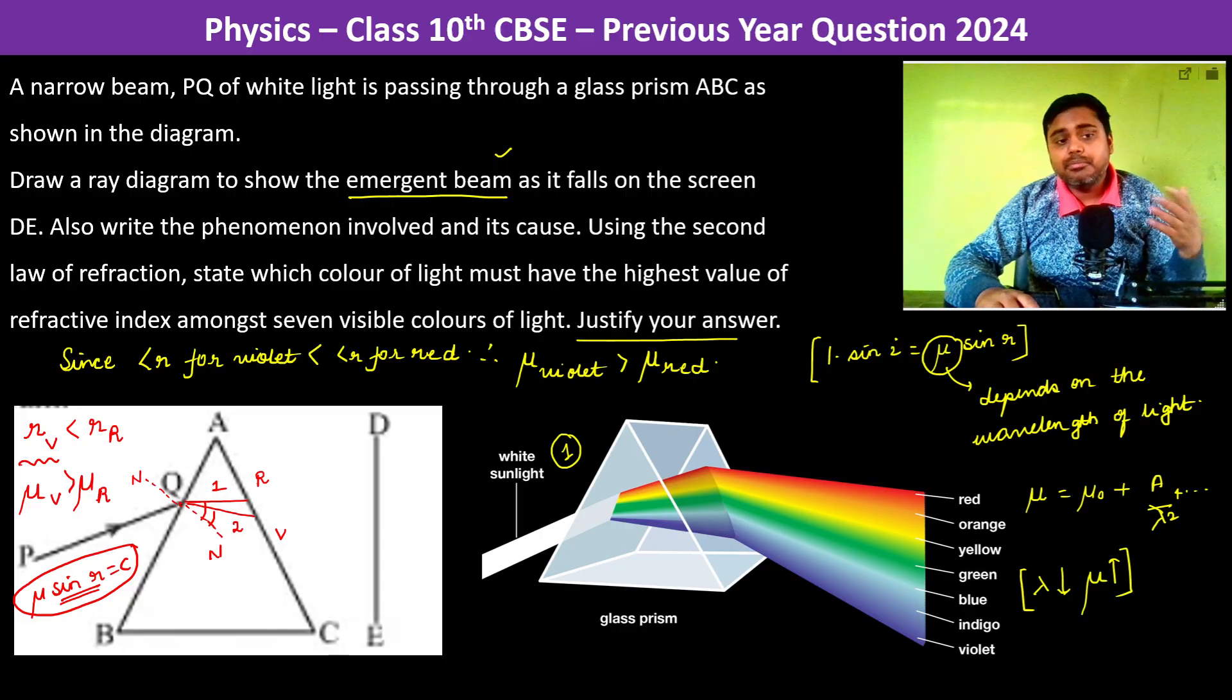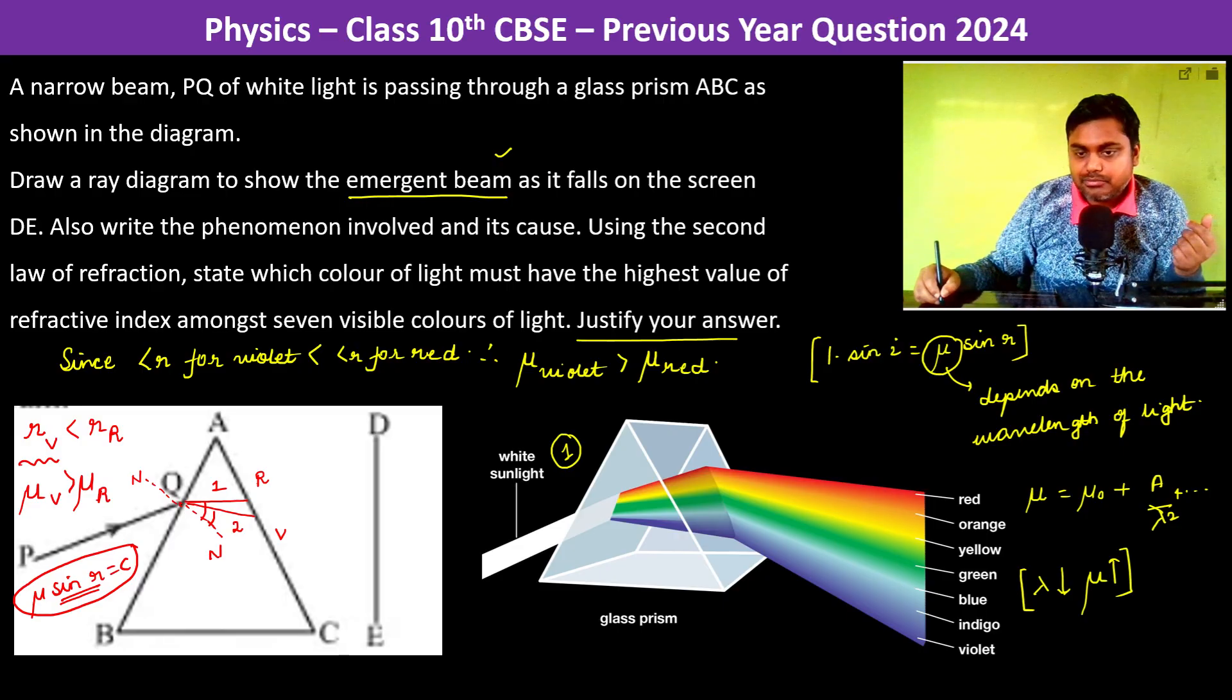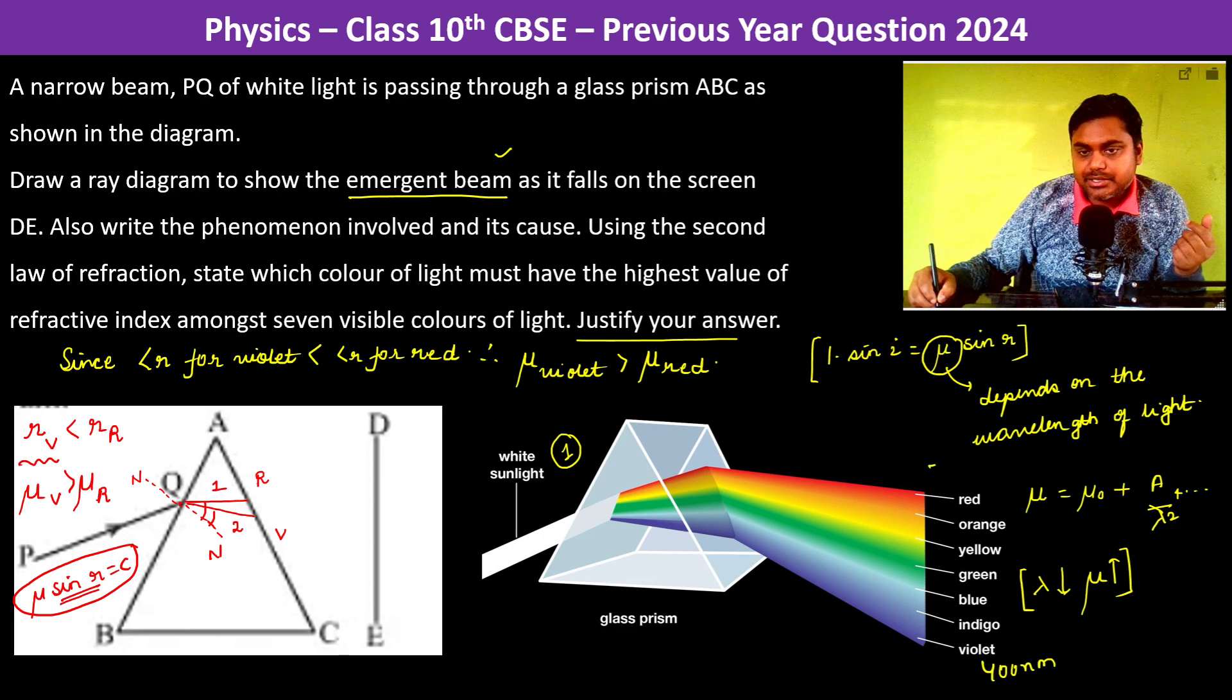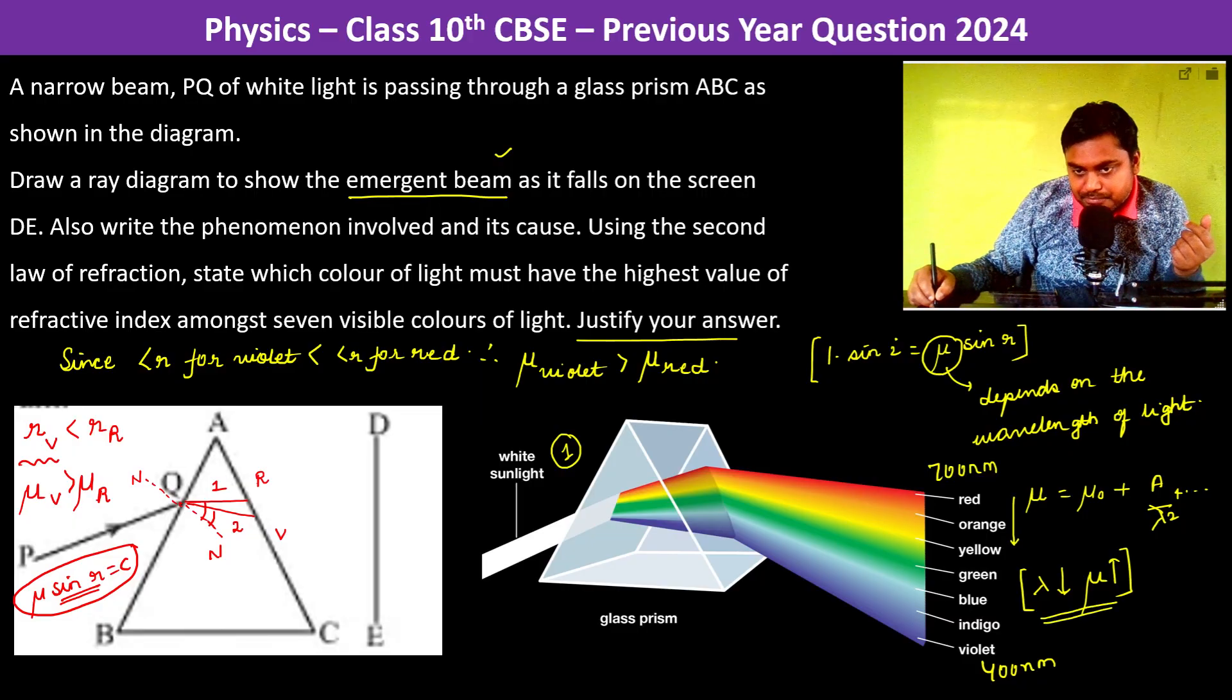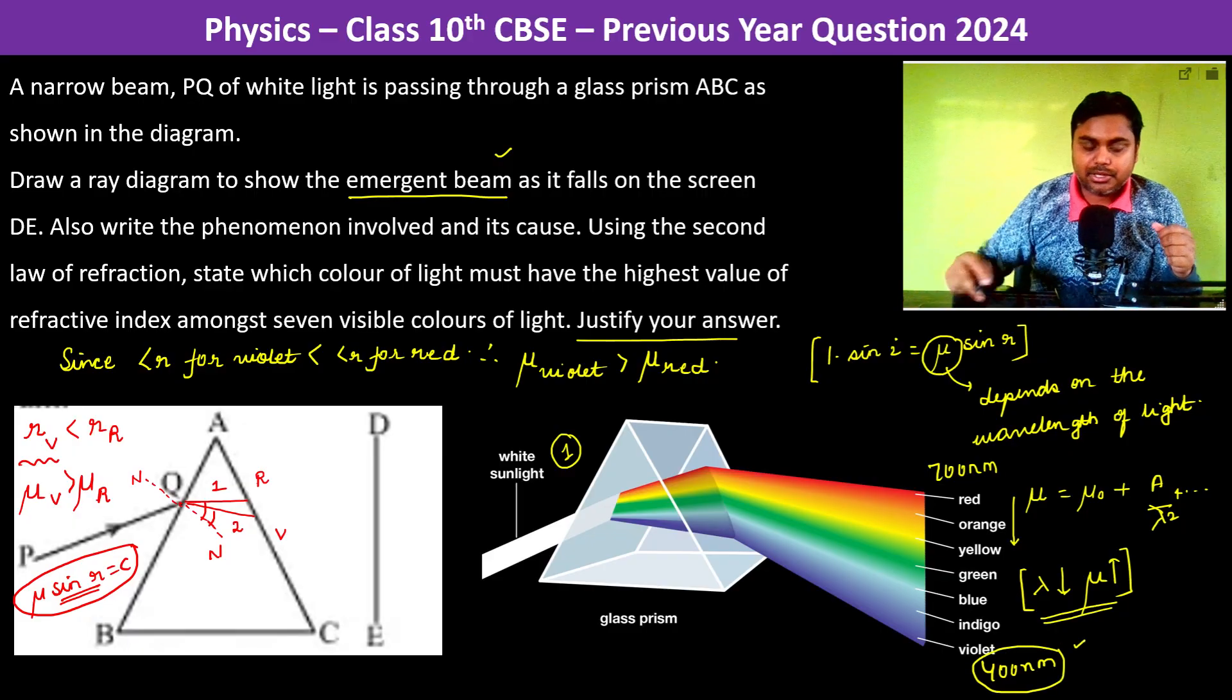And since the angle of refraction for violet is less, therefore the refractive index is more for violet. And this is also in Cauchy's theorem we see this. So violet is basically 400 nanometer, red is 700 nanometer. So lambda is increasing and therefore here lambda is decreasing and mu is increasing. So µ for violet is going to be the most.